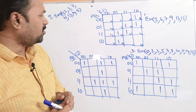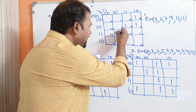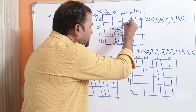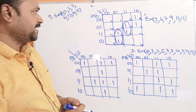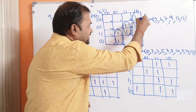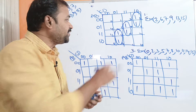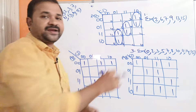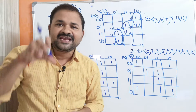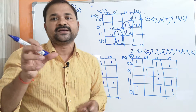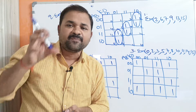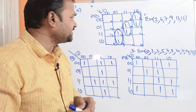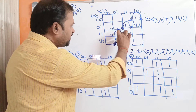Our aim is to produce a simplified expression with the minimum number of terms, where each term contains the minimum number of variables or literals. Observing this problem, we can make these two adjacent cells as a pair, then these two adjacent cells as a pair, then these two adjacent cells as another pair.